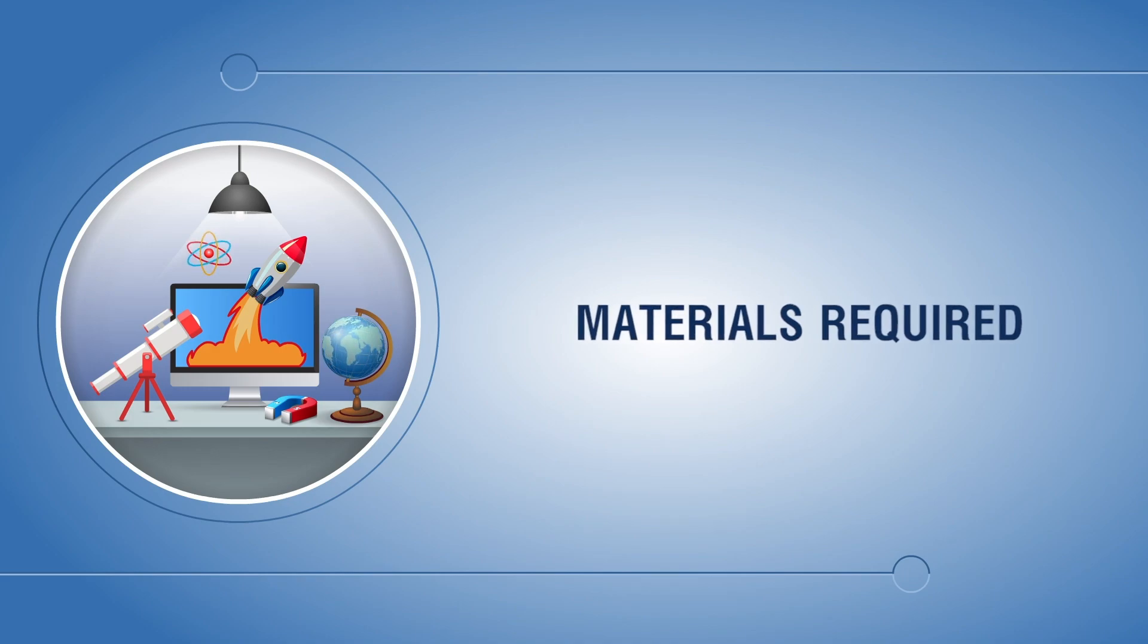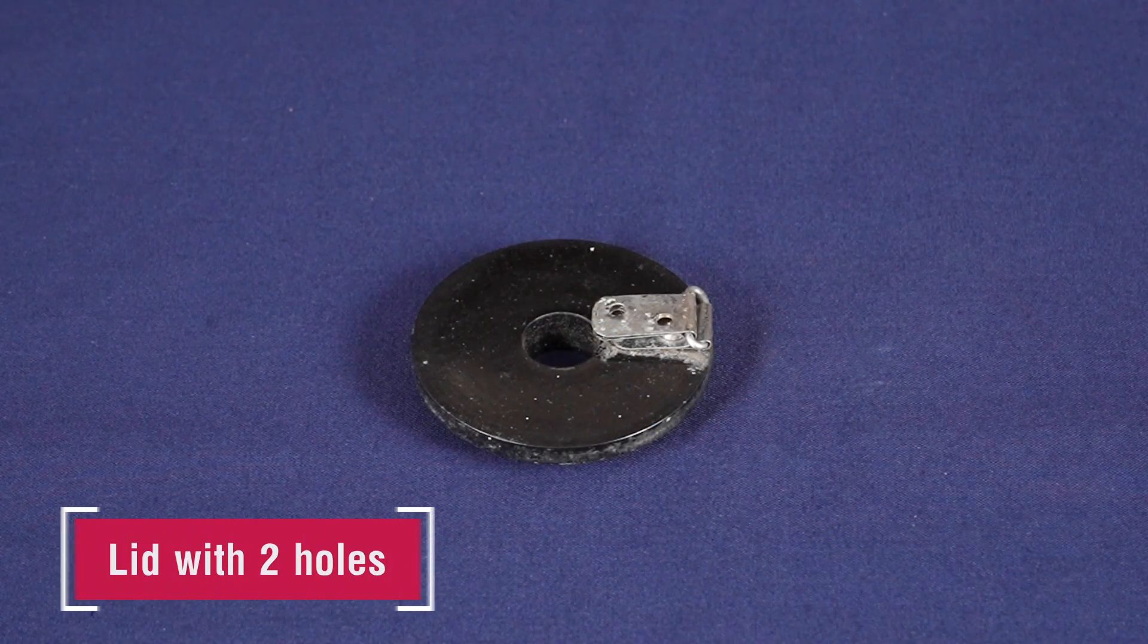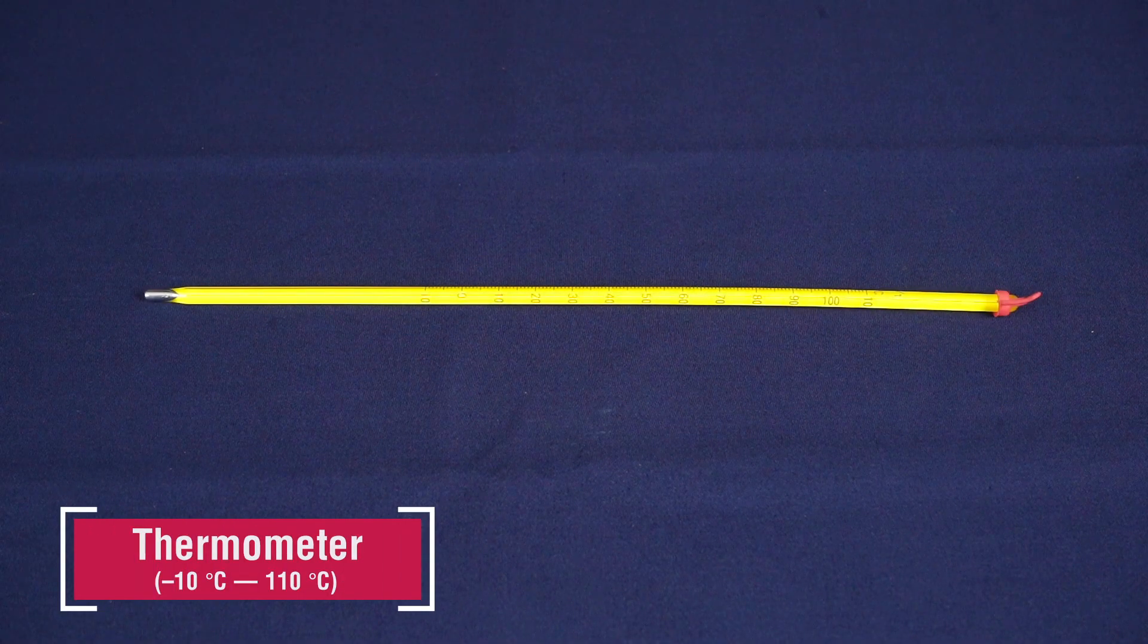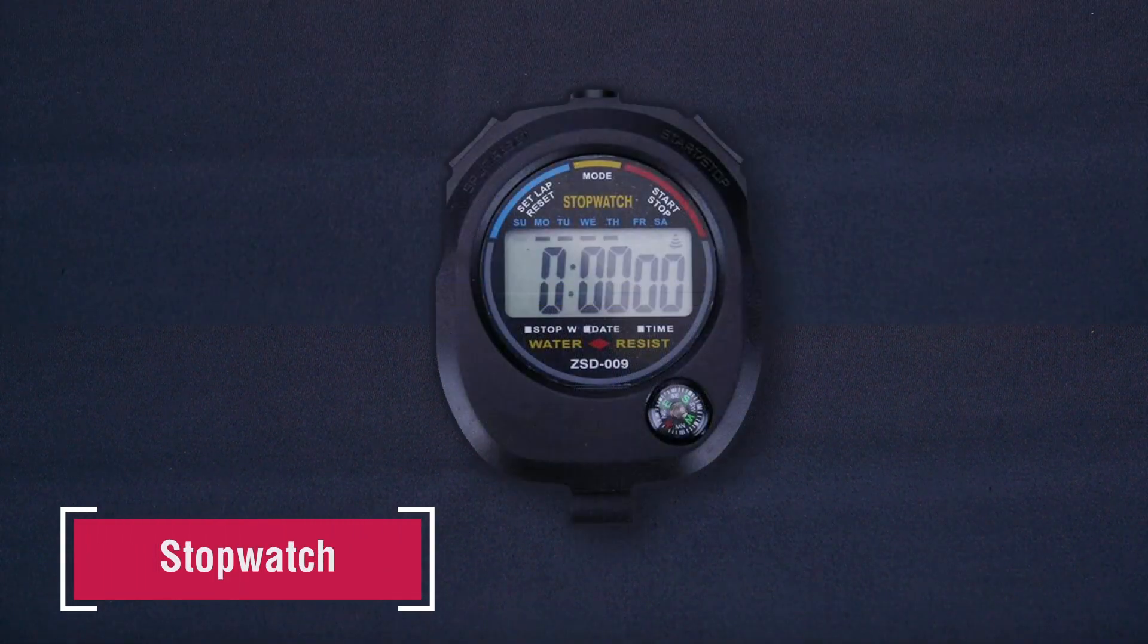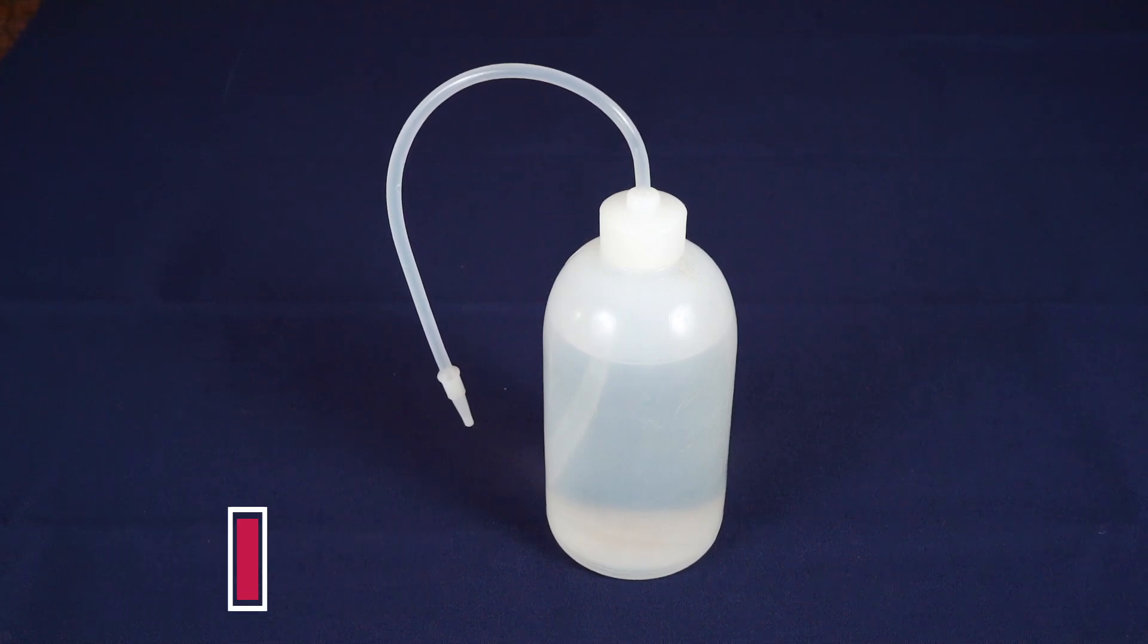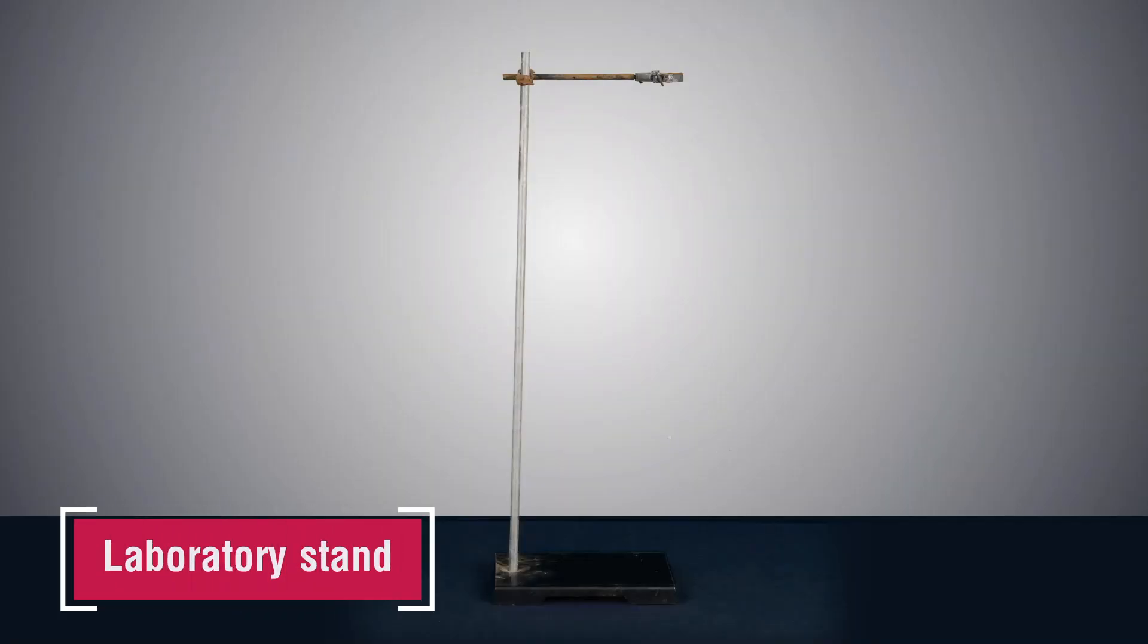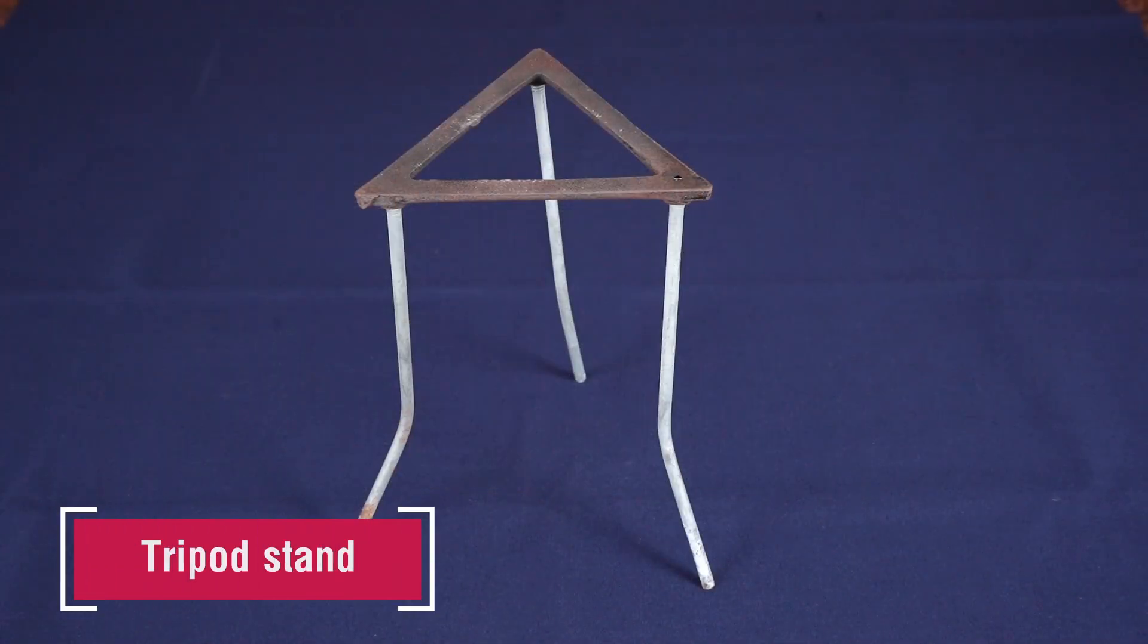Materials required: Calorimeter 500 ml with stirrer, lid with two holes, thermometer minus 10 degrees Celsius to 110 degrees Celsius, stopwatch, Bunsen burner, water, piece of thread, laboratory stand, wire gauze, tripod stand.